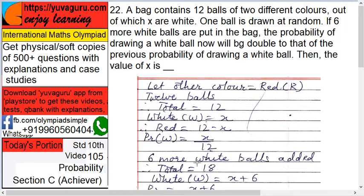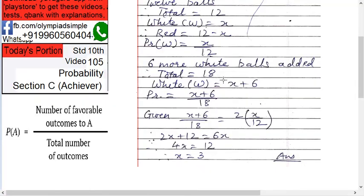Six more white balls are added, so total is 18 now. White is x plus 6, because earlier it was x and now six are added. So probability of getting a white is x plus 6 upon 18. But this new probability is twice the earlier probability, so x plus 6 upon 18 equals 2 into x upon 12.